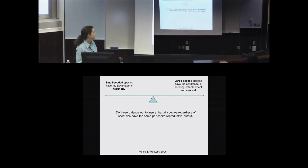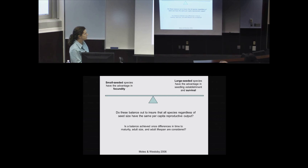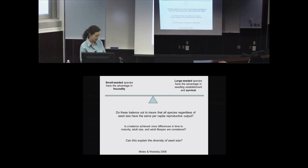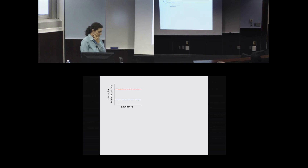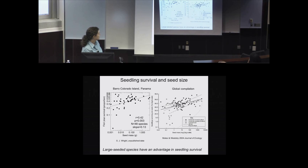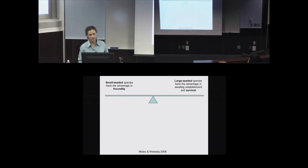Do these balance out to ensure that all species, regardless of seed size, have the same per capita reproductive output? Or, as argued by Moles and Westeby in their 2006 paper, is the balance achieved once differences in time to maturity, adult span, and adult lifespan are considered? Could this explain the diversity of seed size? There's actually much less of an increase in seedling establishment than there is a decrease in seed production — that's why Moles and Westeby had to add time to maturity and adult lifespan.